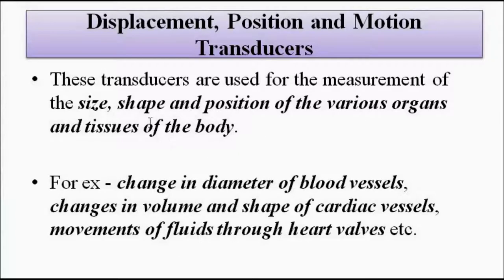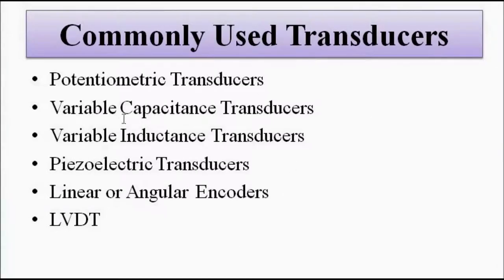Displacement, position, and motion transducers are particularly used for measurement of the size, shape, position, and movement of various organs and tissues in the human body — for example, changes in the diameter of blood vessels, changes in the volume and shape of cardiac vessels, and movement of blood and essential fluids through various organs. Commonly used transducers discussed so far include resistive/potentiometric, variable capacitance, inductive, piezoelectric, and linear variable differential transformer methods.